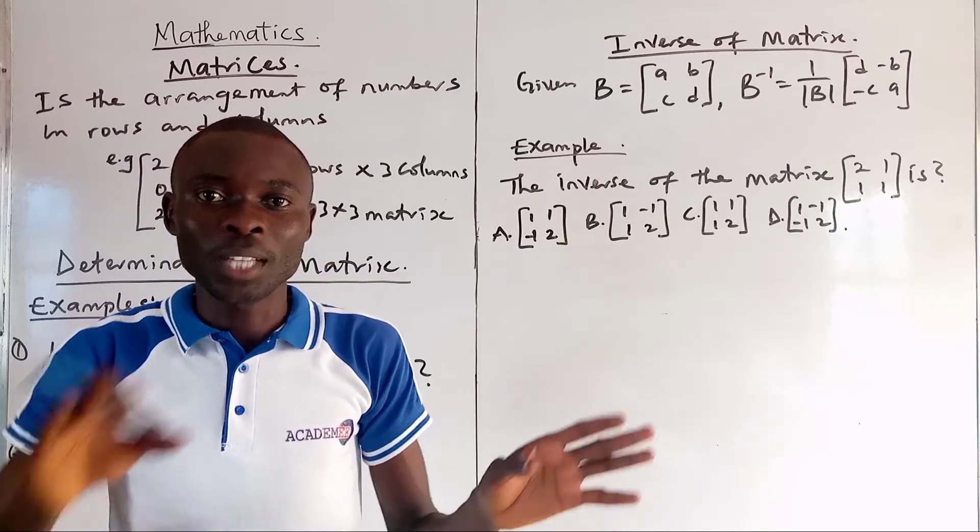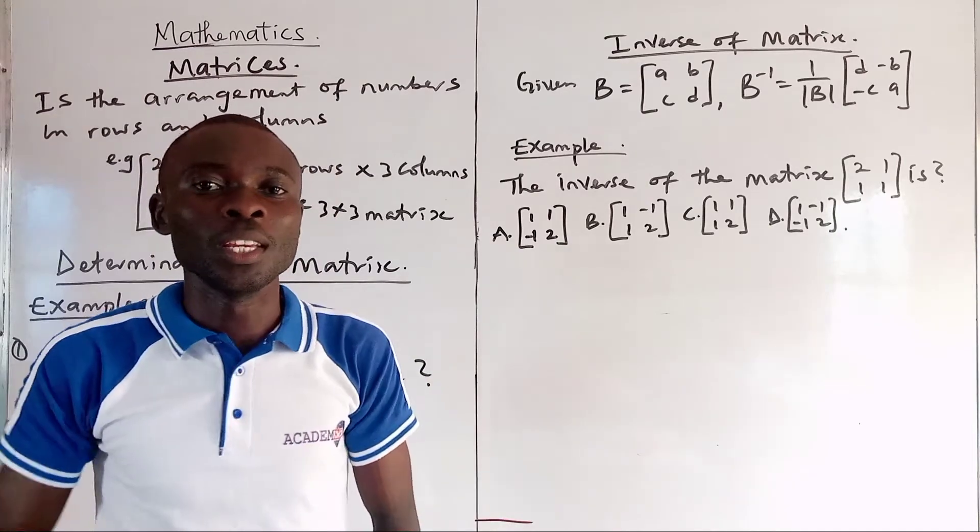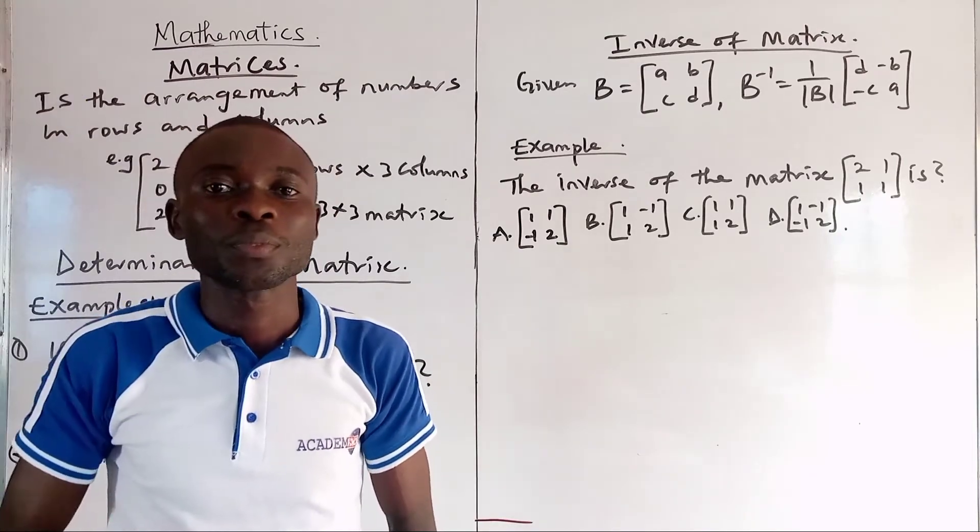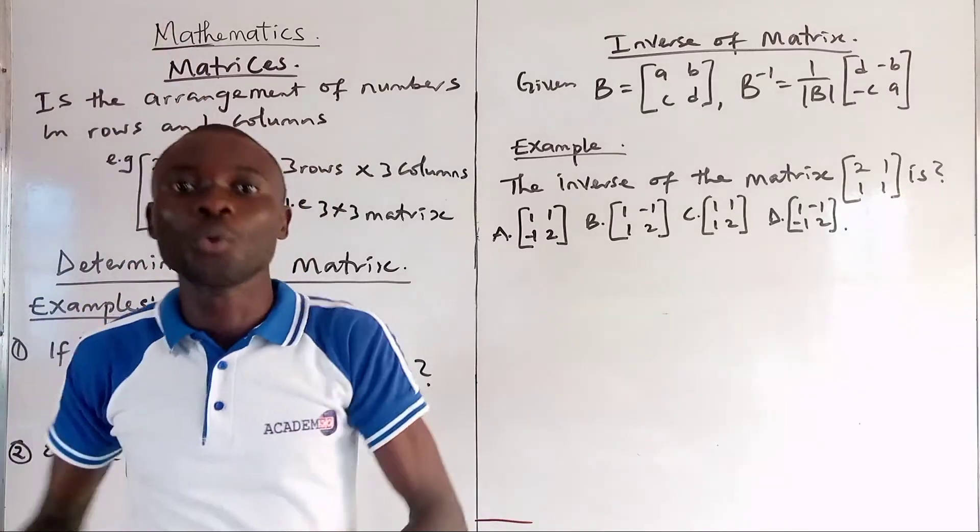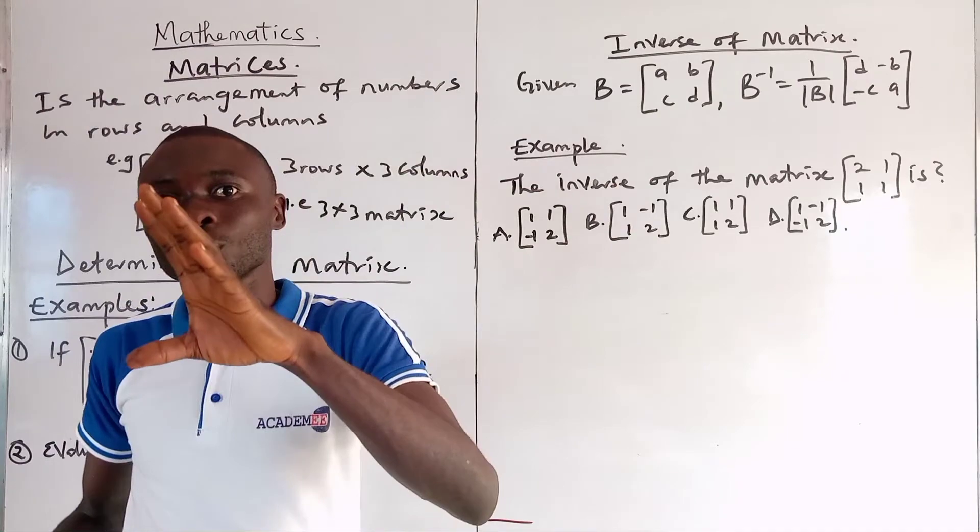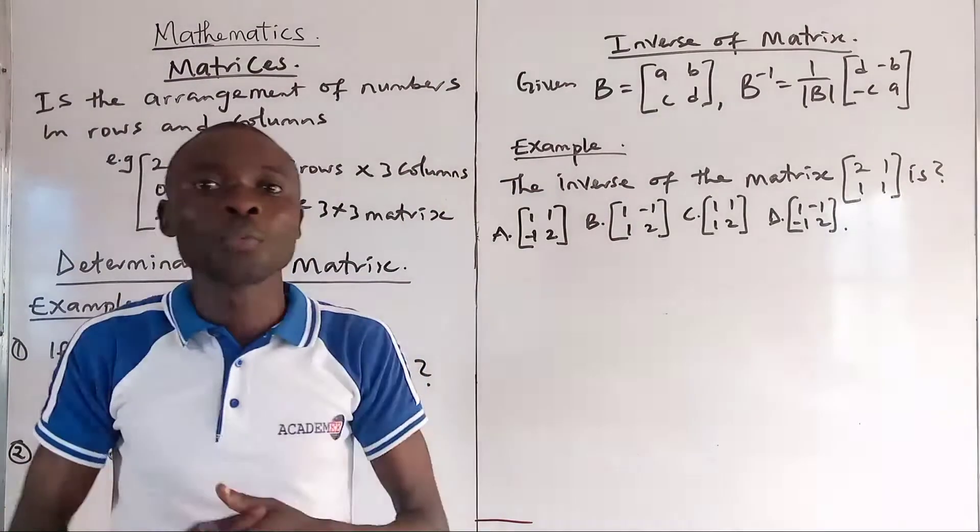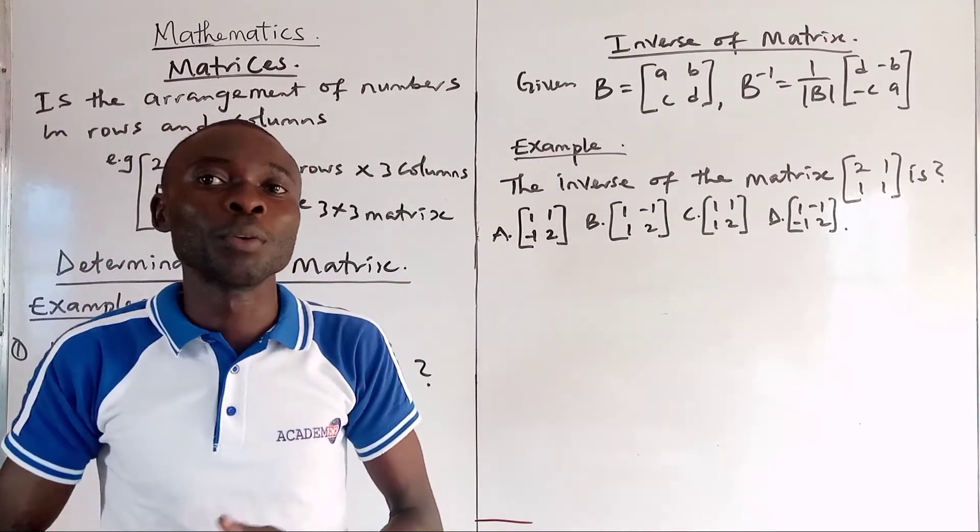What is matrices? It is an array of numbers in rows and columns. You can arrange as many as possible numbers in rows and columns. The number of rows multiplied by the number of columns gives the name of the matrices.